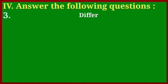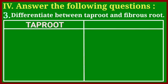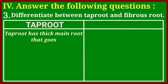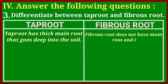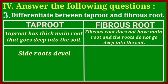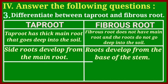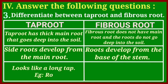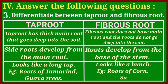Question number three: differentiate between tap root and fibrous root. Tap root has a thick main root that goes deep into the soil; side roots develop from the main root — looks like a long tap. Examples: roots of tamarind and guava trees. Fibrous root does not have a main root and the roots do not go deep into the soil; roots develop from the base of the stem — looks like a bunch. Examples: roots of corn and sugarcane plants.